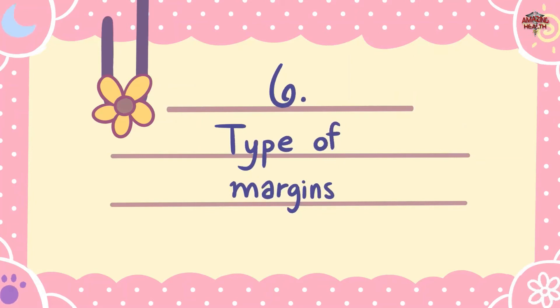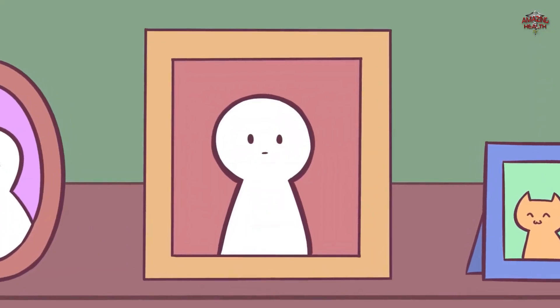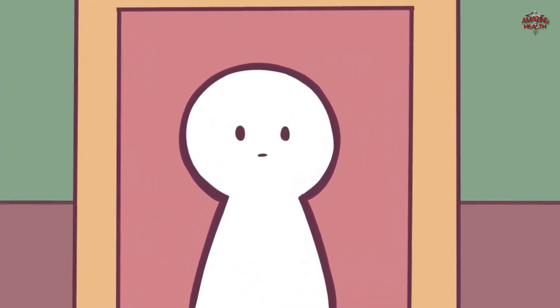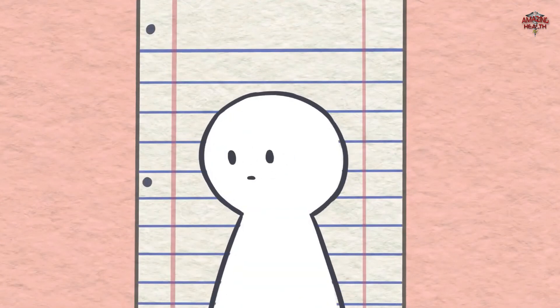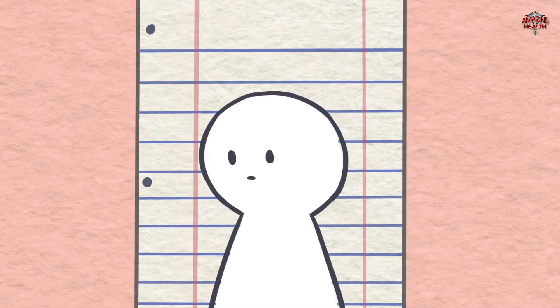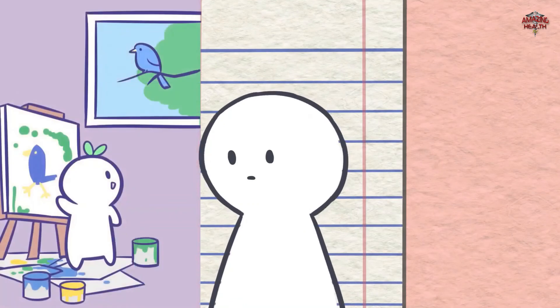Number six: type of margins. Do you leave a large or narrow margin when you write? The amount of space you leave can say a lot about your outlook and attitude towards life. The width of the left margin represents your view of the past, so a narrow left margin shows that you base most of your actions and views on your past experiences.